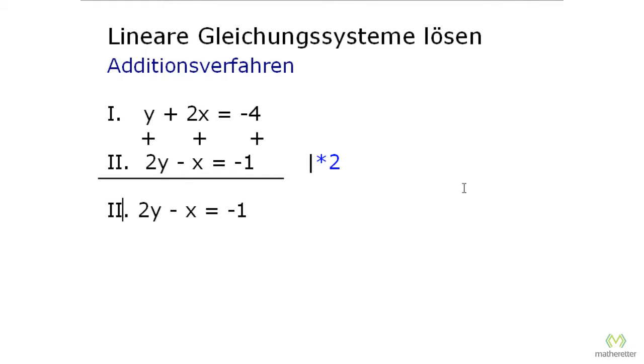You have to multiply the whole equation by 2 to change it. If we copy it down again, then there is 2y times 2, minus x times 2, and minus 1 times 2. 2y times 2 equals 4y, minus 2x, and here minus 2.